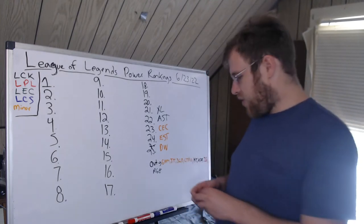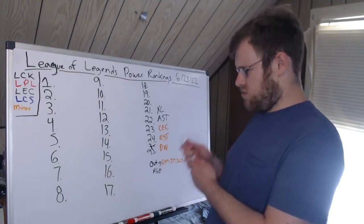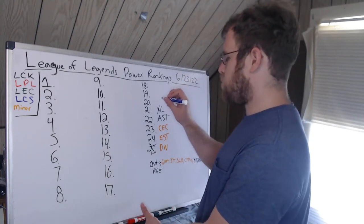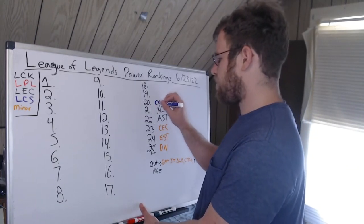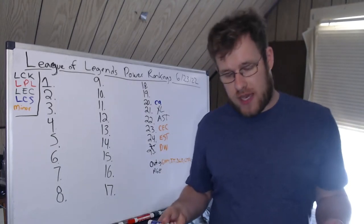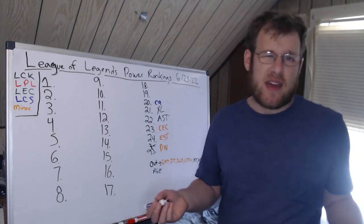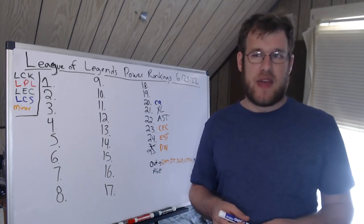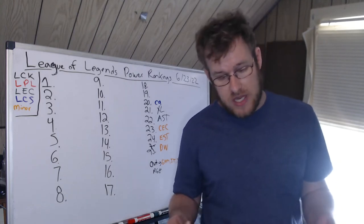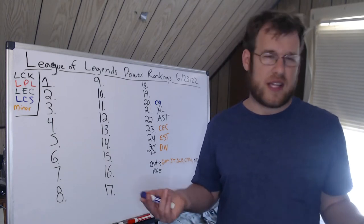20th, I have C9, and C9 drops two spots to 20th. They're 0-3, which is going to be weird—why do you have an 0-3 team up here? Well, they haven't had their bot lane. They've had K1ng and Destiny, an academy bot lane playing for them.